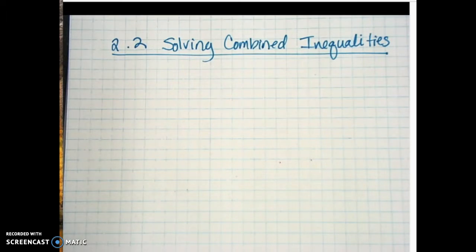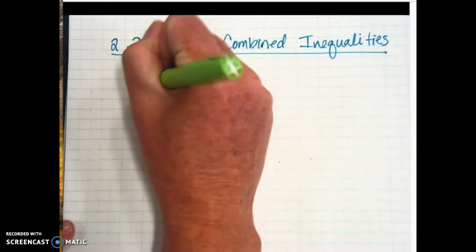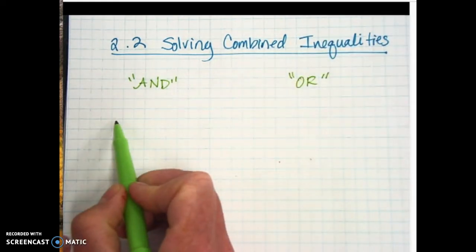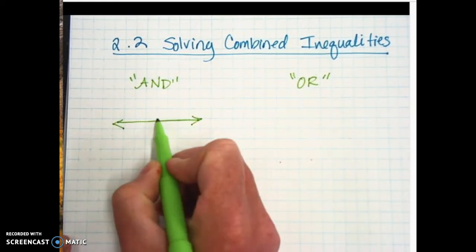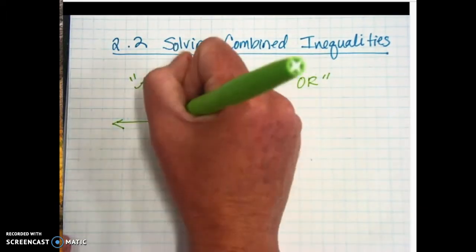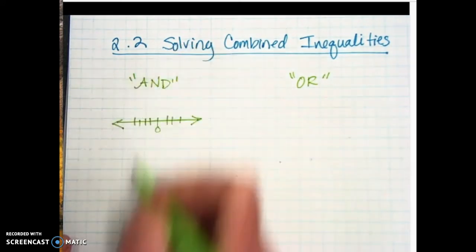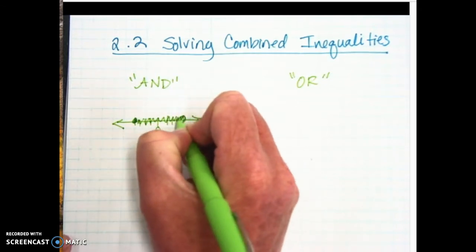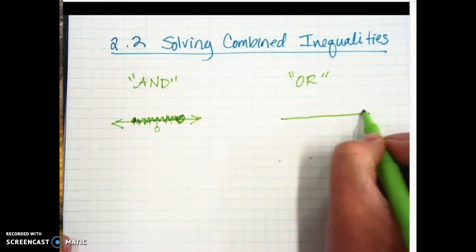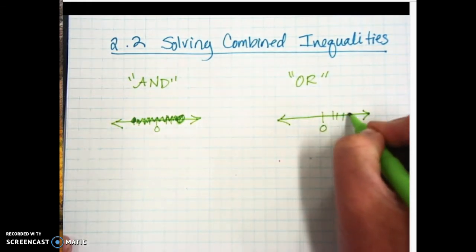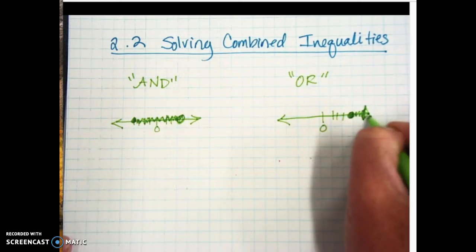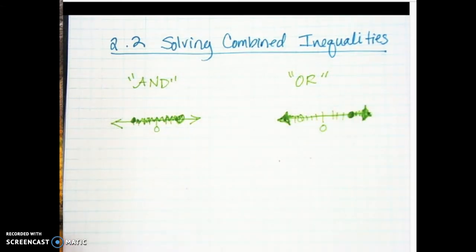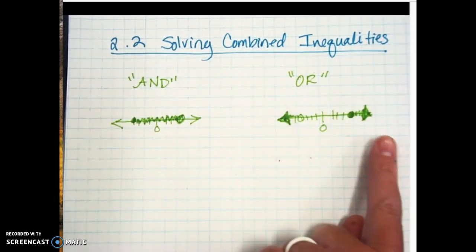What do I mean by a little more complicated? You're going to have basically two different types: your AND inequality and your OR inequality. When you graph the AND on a number line, with a closed circle on one side and an open circle on the other, the AND is going to be shaded in between. The OR will have circles going in opposite directions, shaded away from each other. So the AND overlaps in the middle; the OR goes in opposite directions.